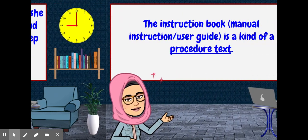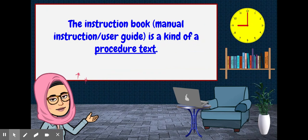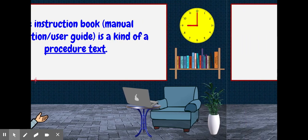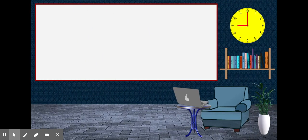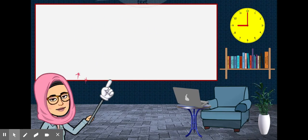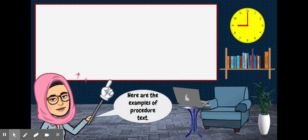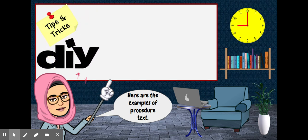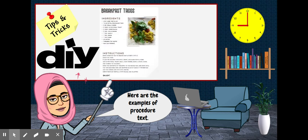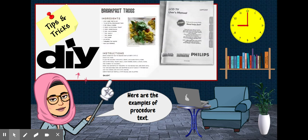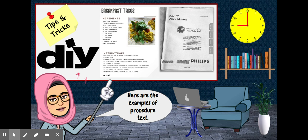Well, the instruction book, or we also call it a manual instruction or user guide, is a kind of procedure text. It is helpful for people to understand how to make or to do something. You may also find the procedure text in tips and tricks, DIY or do it by yourself, and recipe books. And here is the example of instruction book or instruction manual.